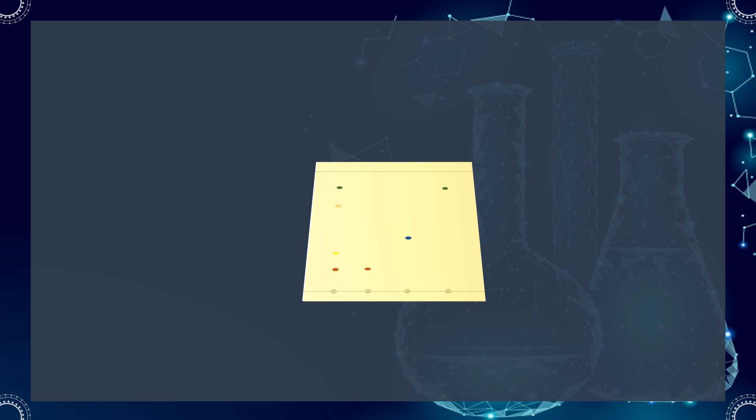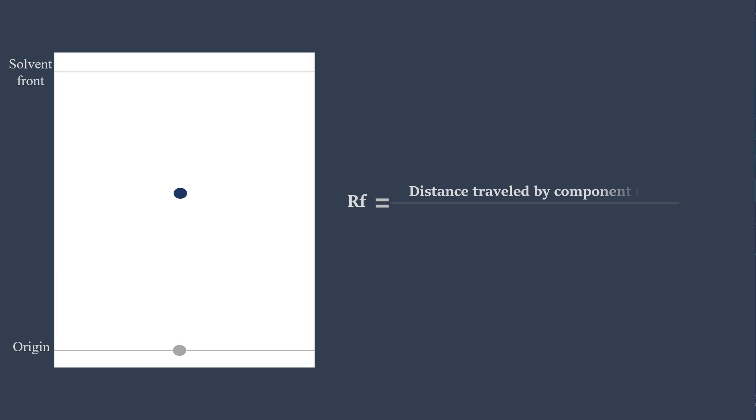Once visible, the RF value, or retention factor, of each spot can be determined by dividing the distance the compound traveled by the distance the solvent front traveled, using the initial spotting site as reference.